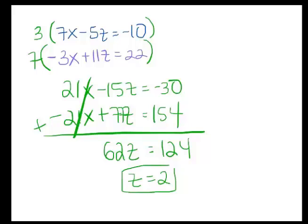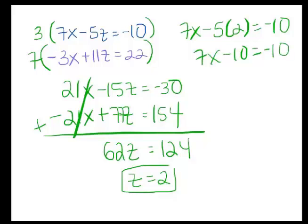Okay, so now you're going to take your z, you're going to plug it back into one of the top two equations. So now let's use the first one. So we'll have 7x minus 5 times 2 equals negative 10. So I get 7x minus 10 equals negative 10. I add 10 to both sides, I get 7x equals 0. So x equals 0.